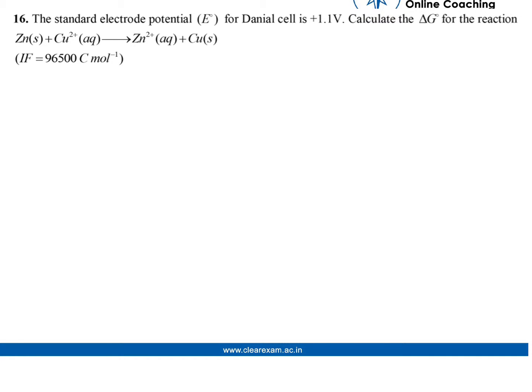The standard electrode potential for the Daniell cell is 1.1V. Calculate the Gibbs energy for the reaction: Zn + Cu²⁺ → Zn²⁺ + Cu.